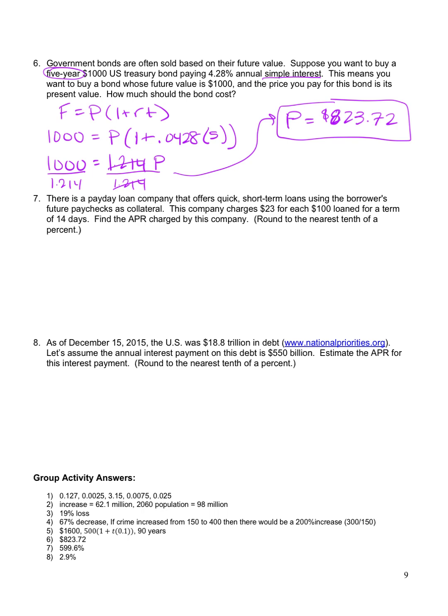So we have my future value is equal to my present value times 1 plus RT. Okay. So my future value, if I take out my $100 loan, my future value, what I owe them, is $123. So I'm going to put $123 here. The principal was $100, that's the present value. And then I have 1 plus R, which is what I'm trying to figure out. And then time is 14 days. But this formula requires you to put in the number of years here. So 14 days is how many years. So I'm going to do 14 out of 365, and it's actually 0.038 approximately years. So I will write it as a fraction first. I did 14 out of 365. That's how many years or what fraction of a year we are being loaned this money for.